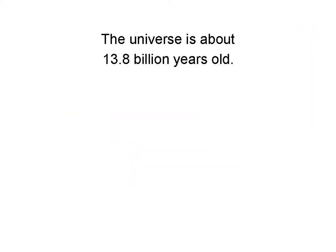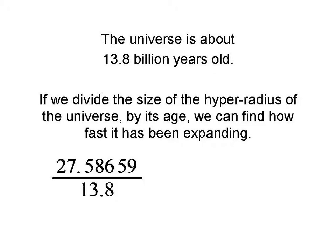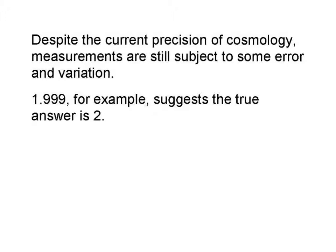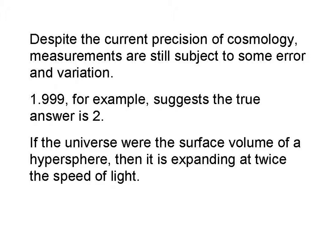The universe is about 13.8 billion years old. So we can divide the size of the hyper radius of the universe by its age and find out how fast it has been expanding. We take our hyper radius value — 27.58659 billion light years — divided by 13.8 billion years, and we get 1.99. That's 1.99 light years per year. The numbers we have in cosmology are not exactly precise, and that 1.99 really suggests that the true number is 2. So what we see is that the universe, as the surface volume of a 4D sphere — a hypersphere — is expanding at twice the speed of light.